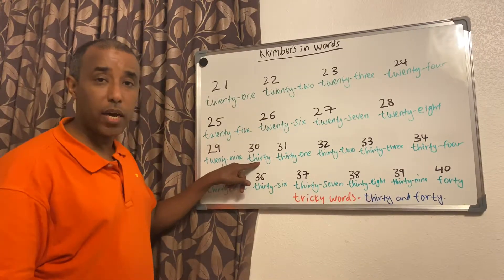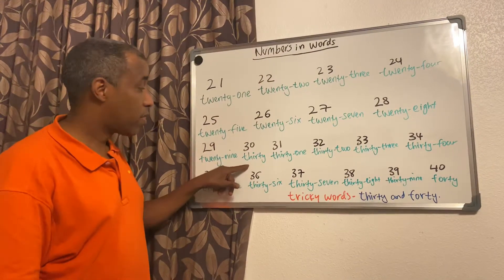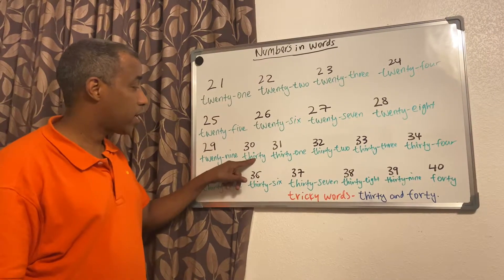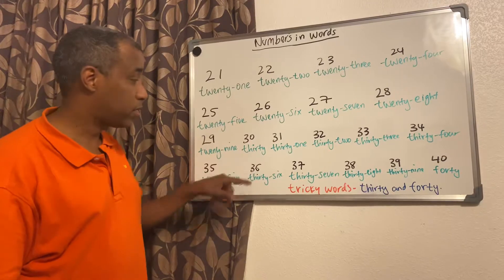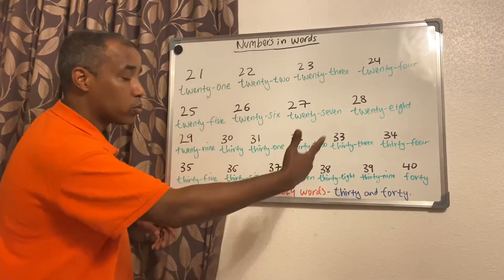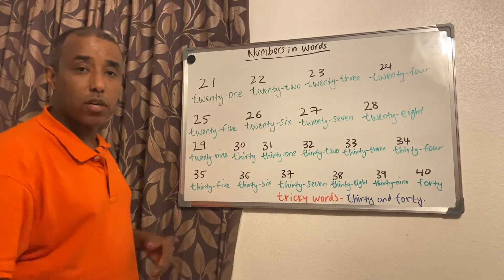The rest are exactly the same: thirty-one, thirty-two, and so on. Anytime you can refer to my previous videos for one and two. The last one I'm going to spell is 40: F-O-R-T-Y.